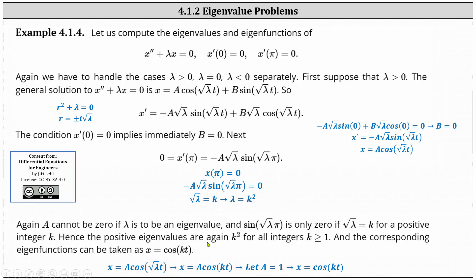Hence, the positive eigenvalues are lambda equals k squared for all integers k greater than or equal to 1. The corresponding eigenfunctions can be taken as x equals cosine kt. Since x equals a cosine square root lambda t and square root lambda equals k, we have x equals a cosine kt. Letting a equal 1, we have x equals cosine kt.